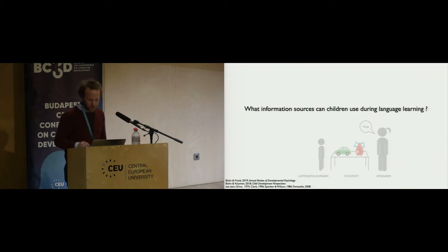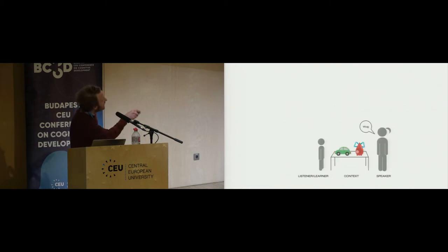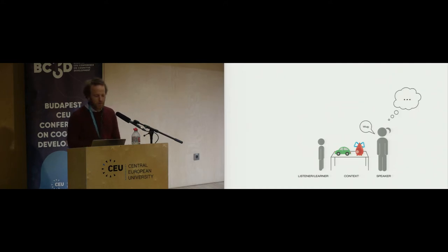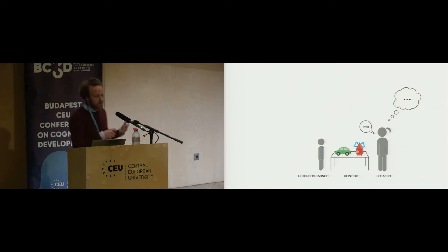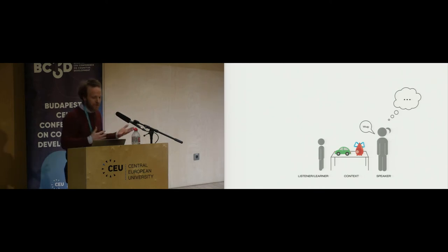Consider this schematic example: you have a speaker on the right — maybe a parent — and a child on the left. The speaker uses the word 'wug,' and the child doesn't know what it refers to. How can the child figure out what this word means, and identify the referent, which would allow the child to learn the label for this object?